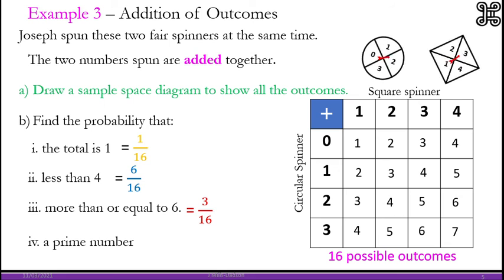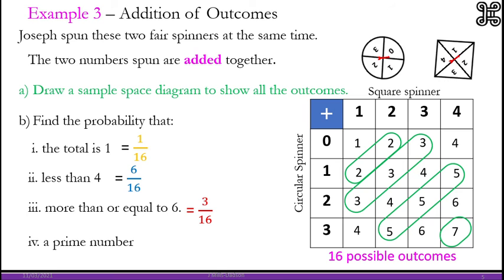A prime number. You must know your prime numbers. 2, 3, 5, 7, 11 and so on. So if you know your prime numbers you will be able to pick the right prime numbers. So 2, 3, 5 and 7. And count how many are there? 9. So it is 9 out of 16.